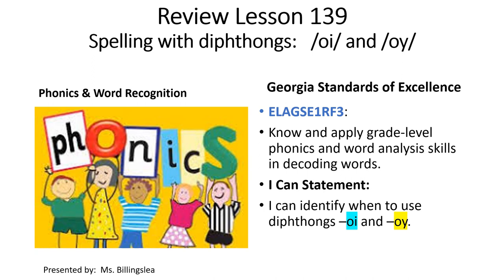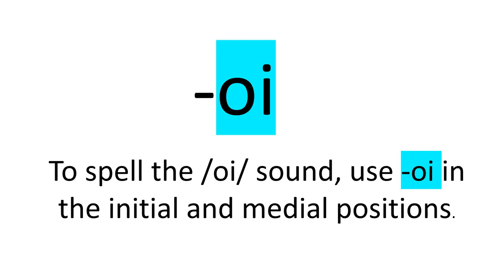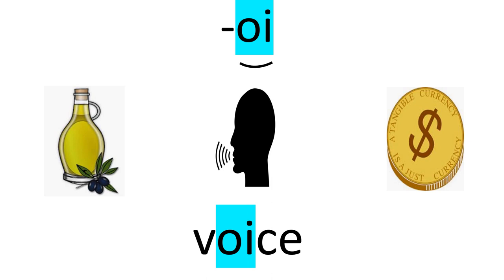This week we're looking back on everything we've learned about phonics and reviewing it so that we can be sure we use all our knowledge to make us better readers and writers. To spell the OI/OY sound, use OI or OY in the initial and medial positions, as in oil, voice, and coin.